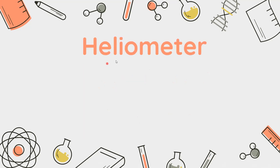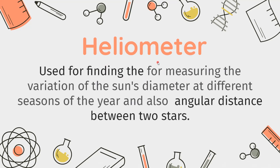Next is the Heliometer. A Heliometer is used for measuring the variations of the sun's diameter at different seasons of the year. Initially when a heliometer was invented, it was used for measuring the sun's diameter; however, now it is also used to measure the angular distance between two stars.